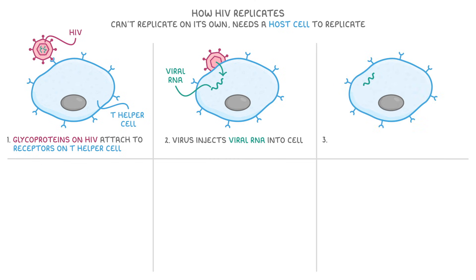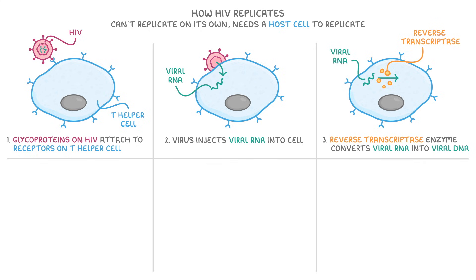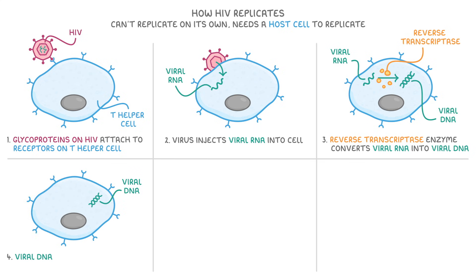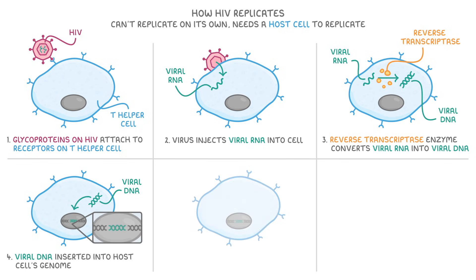Next, inside the T helper cell, the reverse transcriptase enzyme converts the viral RNA into viral DNA. So the single-stranded viral RNA will be changed by reverse transcriptase into double-stranded viral DNA. This new viral DNA is then inserted into the host cell's genome, so it effectively hides within the cell's own DNA. As the T helper cell goes about its normal functions, its DNA is transcribed and translated to produce proteins, but this host cell now also produces viral proteins, because the viral DNA is within its own genome and is used as code for making proteins.